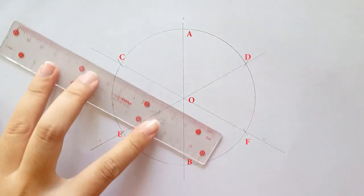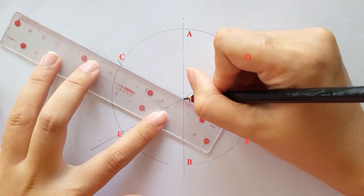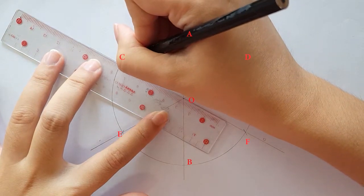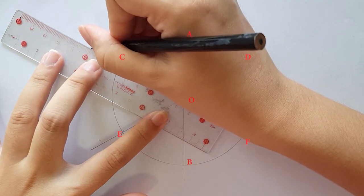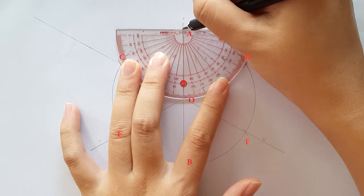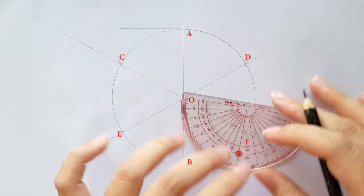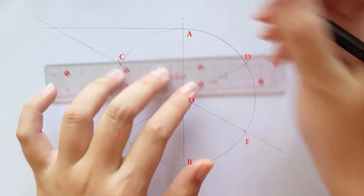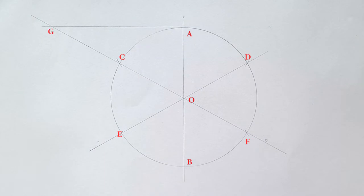Extend line OC and draw a perpendicular line on point A until they cross over to form a half triangle. This point is called point G.